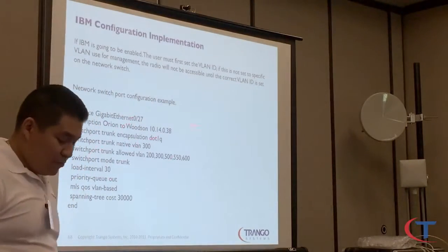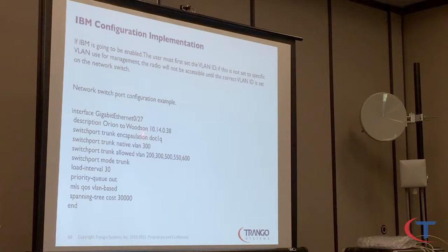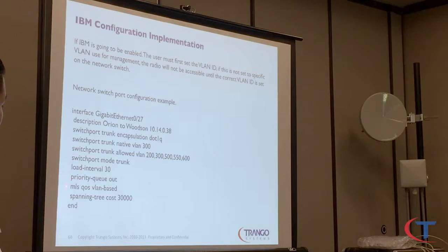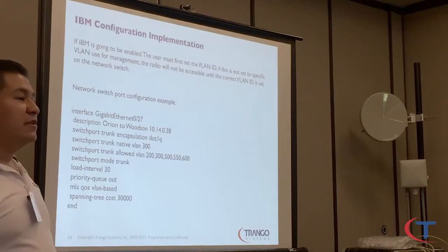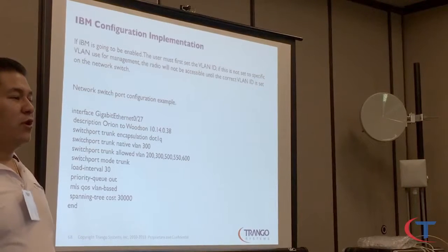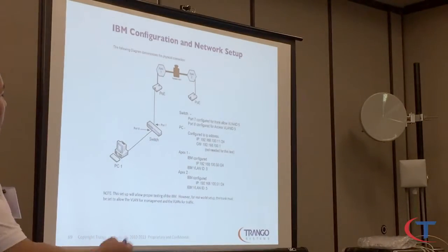This is a sample config for our triangle trunk ports. On the Cisco switch: description, encapsulation dot1q, trunk with native VLAN 300 which is our management VLAN, and allowing specific VLANs over the port. These VLANs must also be declared on the traffic port — 200 is accounting, 300 is engineering, 500 is internet, 550 is ISP, 600 is engineering lab. Switch port mode trunk so anything goes across. We also have spanning tree port cost: if one link goes down, spanning tree kicks in and forwards traffic to the lowest cost value.